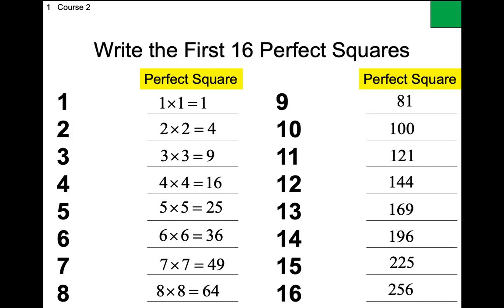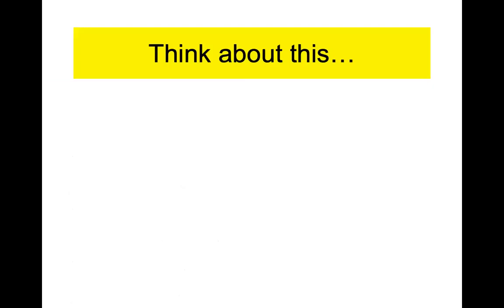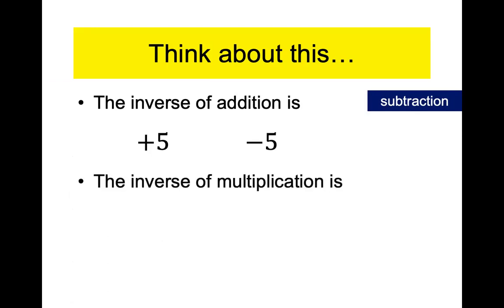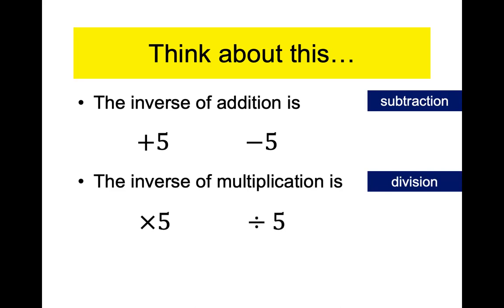Box one, okay. The inverse of addition is subtraction. If we start with a number and add five to it, the inverse undoes that operation — subtracting five. The inverse of multiplication is division — if we start with 10 and multiply by five we get 50, and to go back to 10 you divide. So what's the inverse of squaring?